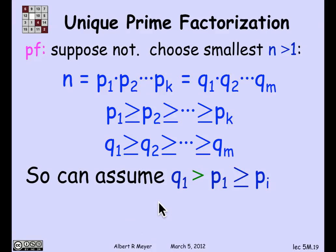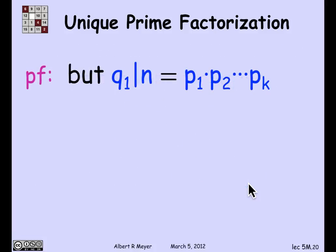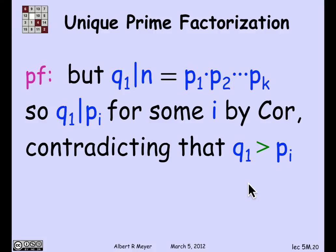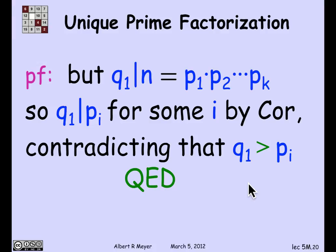So one of them has to be greater. We may as well assume q₁ is bigger than p₁, and since p₁ is the largest of all the p's, q₁ is bigger than every one of the p's. But q₁ divides n, and n is the product of the p's, so by the corollary, q₁ must divide pᵢ for some i. That contradicts the fact that q₁ is bigger than pᵢ — a larger number cannot divide a smaller one. So we're done, and we have proved the unique factorization theorem.